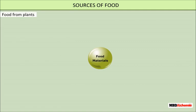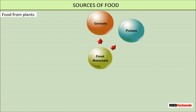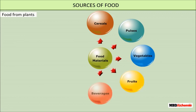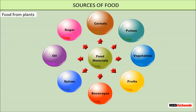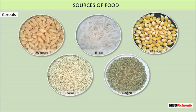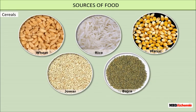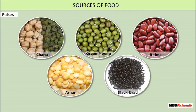Different types of food that we obtain from plants are cereals, pulses, vegetables, fruits, beverages, spices, oil, and sugar. Cereals form the major part of our diet. We mainly eat wheat, rice, maize, jowar, and bajra.